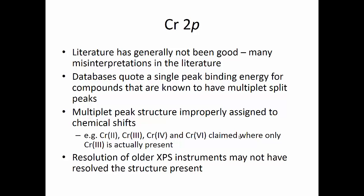The multiple peak structure has been improperly assigned to chemical shifts. For example, papers have claimed the presence of chromium 2+, chromium 3+, chromium 4+, and chromium 6+ where only chromium 3+ is actually present. Some of the issue may have been the resolution of older XPS instruments, and some of it is simply a lack of understanding that multiple splitting is occurring.